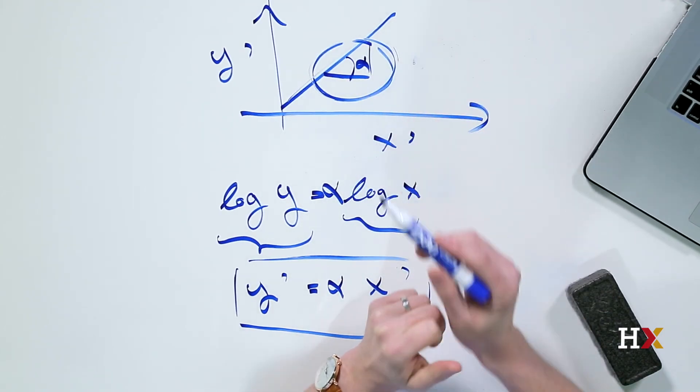So the lesson here is that functions of the form y is equal to x to power alpha show up as straight lines on a log-log plot. The exponent alpha is given by the slope of the line.